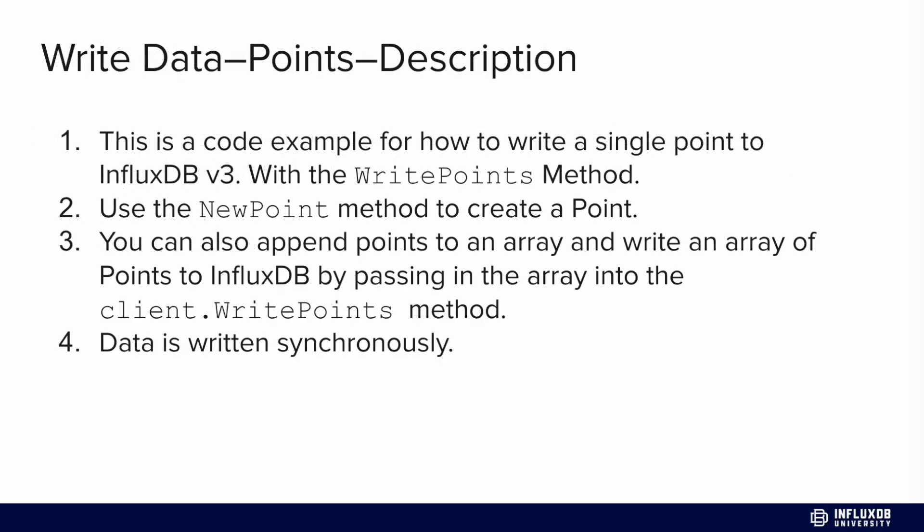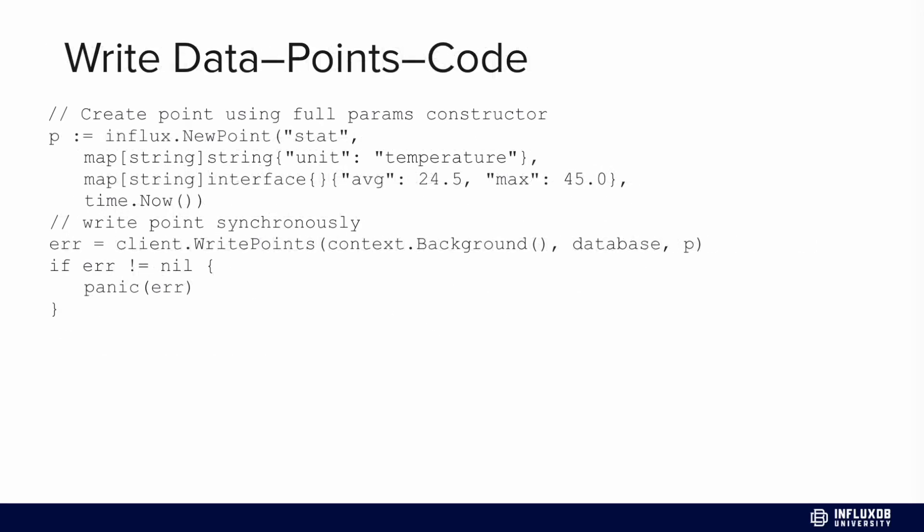However, we can also write points. If you don't want to worry about constructing line protocol, you can use the write points method instead. You can use the new point method to actually create a point, so you don't have to remember what is comma-separated, et cetera. We're going to use the new point method to generate a new point, and we can include strings, field values, and also any timestamps we want. Then we can just pass that point into the write points method instead. It's also important to notice that you can append these points to an array and write an array of points as well.